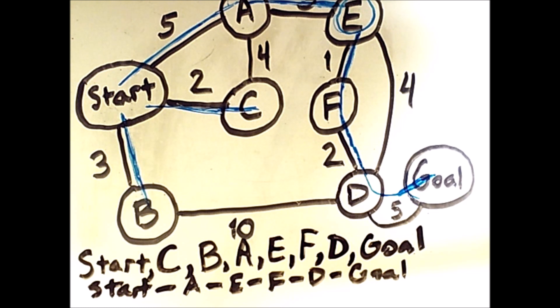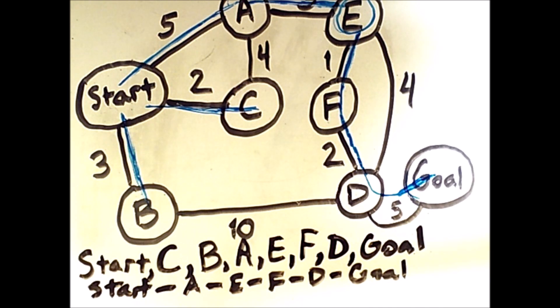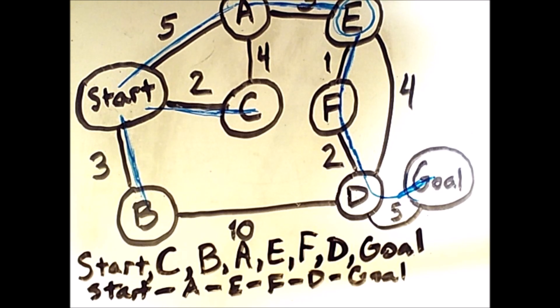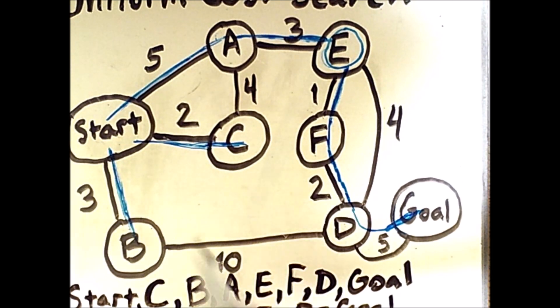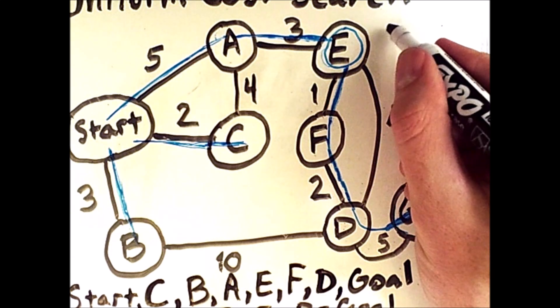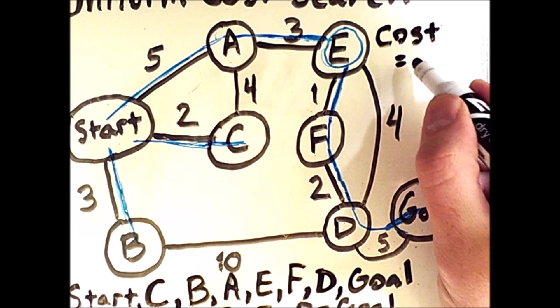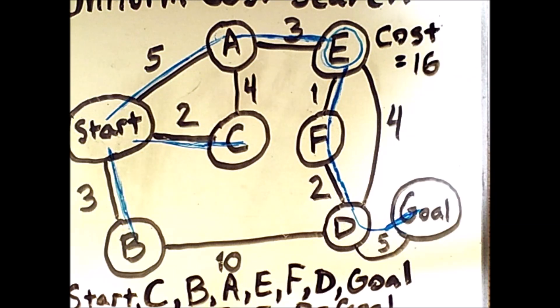So what that means is that the cost of the path that was found only includes the edges that are part of this optimal path. We don't include the cost of checking these possible options that ended up not working out. So, the actual cost of the path we traversed is 5 plus 3 plus 1 plus 2 plus 5. So the total cost of the optimal path is 16. And that is how uniform cost search works.